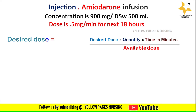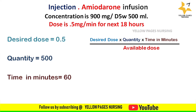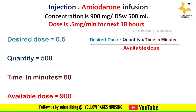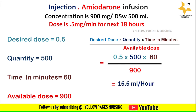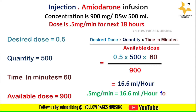For the dose of 0.5 mg per minute for the next 18 hours: desired dose = 0.5, quantity = 500, time in minutes = 60, available dose = 900. Applying the formula gives 16.6 ml per hour, which can be rounded up to 17 ml per hour. Hence, 0.5 mg per minute is administered as 17 ml per hour for the next 18 hours.